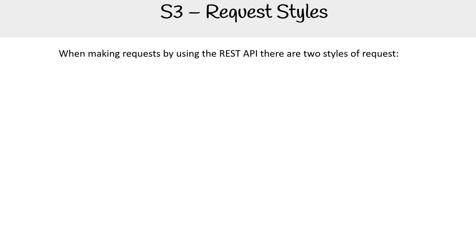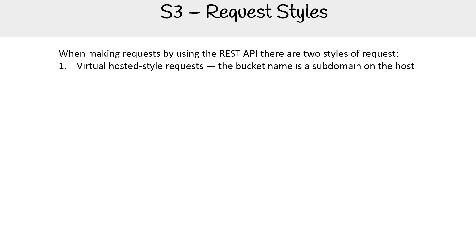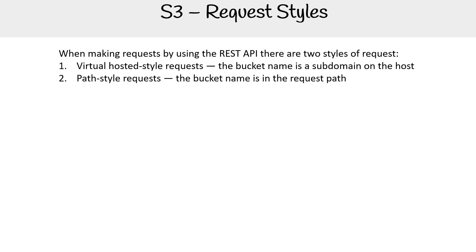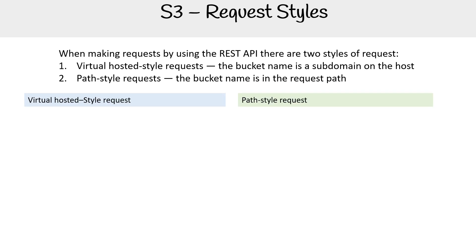In S3, when you make a request, there are actually two different styles of requesting that information. The first is the virtual hosted style request, where the bucket name is the subdomain on the host. Then you have the path style request, where the bucket name is in the request path itself. Don't worry, we'll show you much more clearly right now.